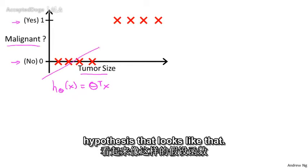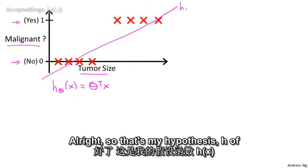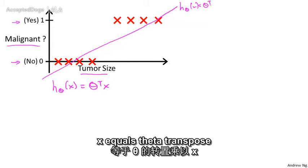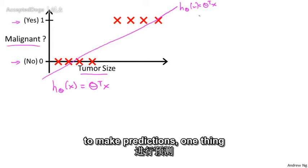So if you take this training set and fit a straight line to it, maybe you get a hypothesis that looks like that. That's my hypothesis, h of x equals theta transpose x. If you want to make predictions, one thing you could try doing is then threshold the classifier output at 0.5, that is at the vertical axis value 0.5.